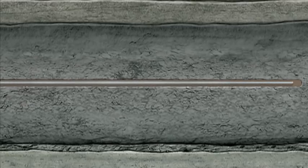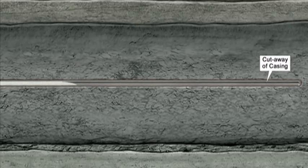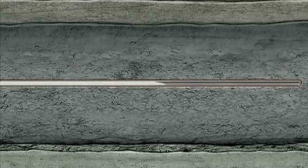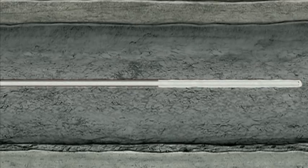Cement is once again pumped down the well and forced up between the casing and wall of the hole. This process permanently secures the well bore and prevents hydrocarbons and other fluids from seeping out from the surrounding rock formations into the well.